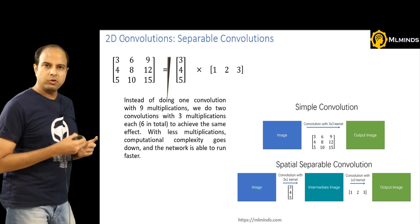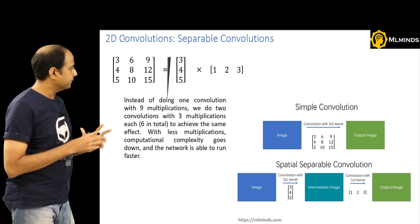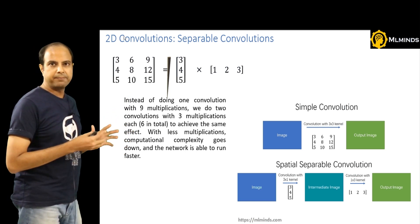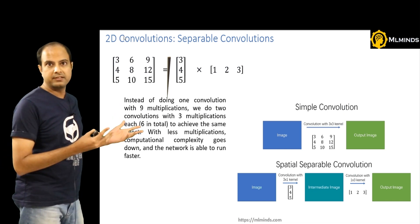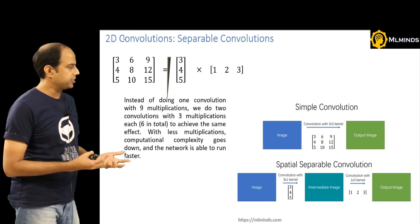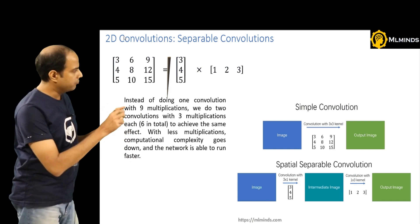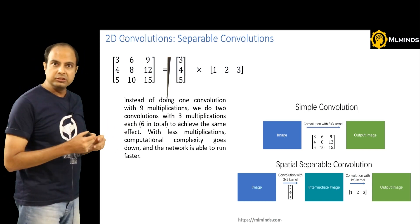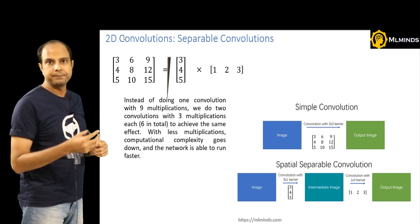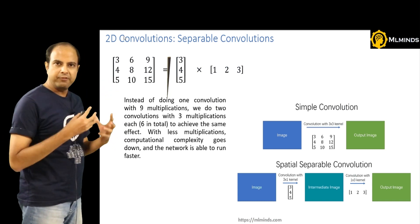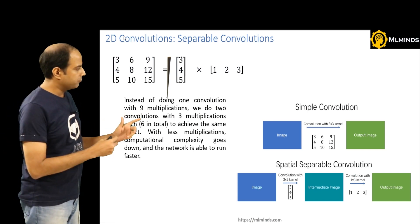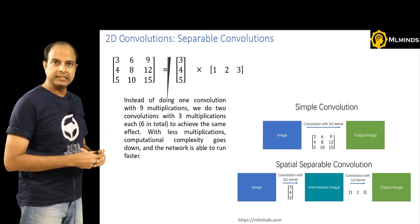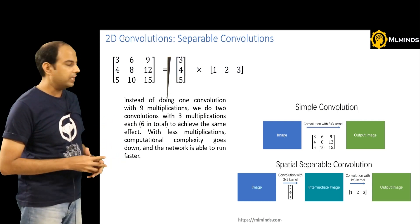Here's a concrete example. Say your original filter is the 3×3 matrix [[3,6,9],[4,8,12],[5,10,15]]. This can be decomposed as the column vector [3,4,5] multiplied by the row vector [1,2,3]. You can verify this with standard matrix multiplication. So instead of doing a convolution with that 3×3 kernel, you do it in two steps: first a 3×1 convolution with [3,4,5], then a 1×3 convolution with [1,2,3], and you get the same output.